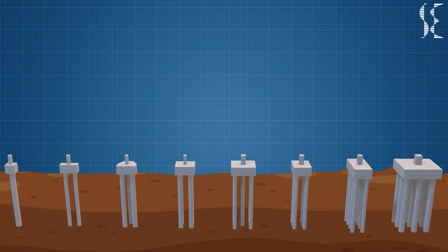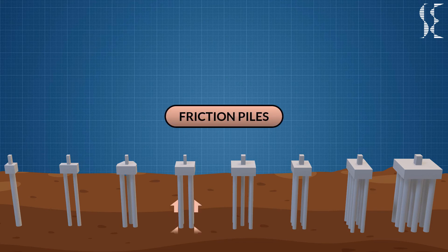If the hard strata is not available, the piles transfer load by a skin friction mechanism in which friction is developed between soil and pile surface.